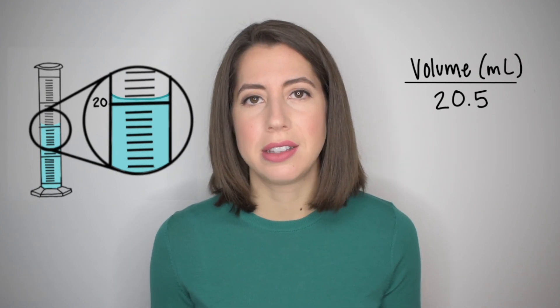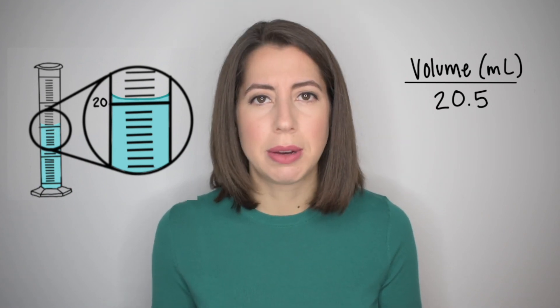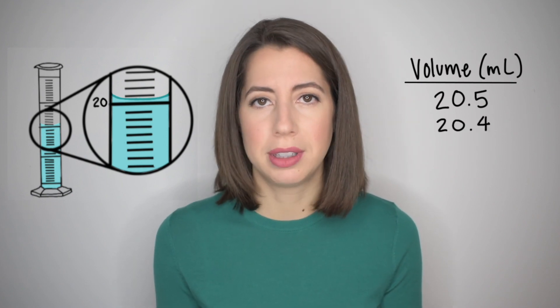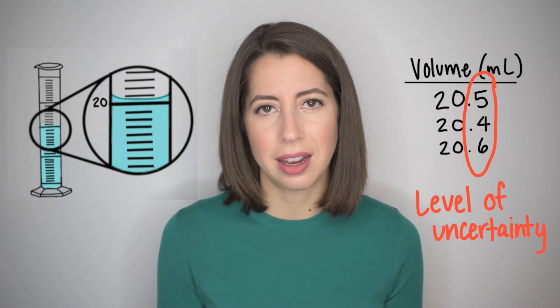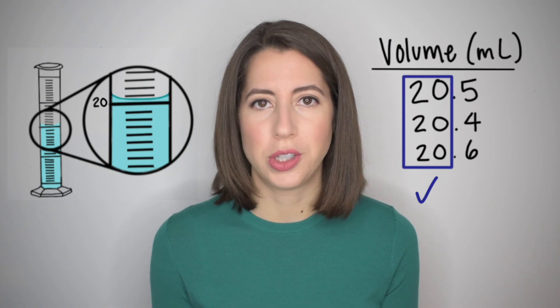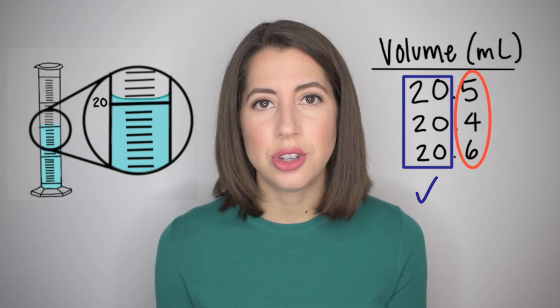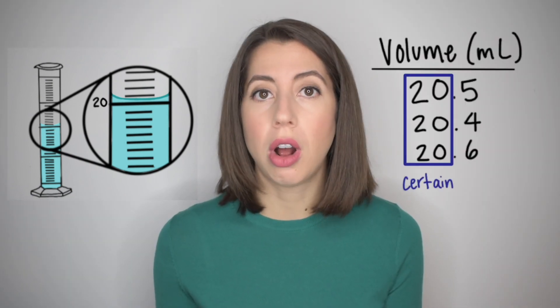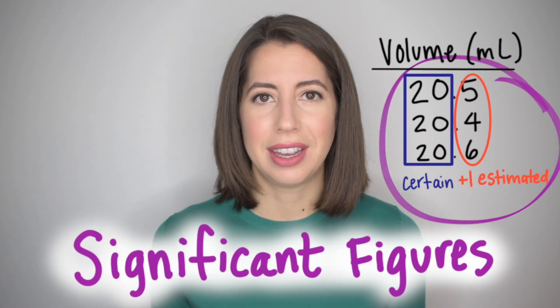So we could record this volume as 20.5 milliliters since it's between 20 and 21. Someone else might record the same volume as 20.4 milliliters or 20.6 milliliters. So there's always a level of uncertainty when recording data. That's normal, but there are some best practices to avoid too much uncertainty. The 20 is certain because we can read 20 on the graduated cylinder. And by recording our data to the tenth place, we're recording it one digit beyond the certain digit. We report our measurements to include all of the certain digits plus one estimated digit. These digits are called significant figures.